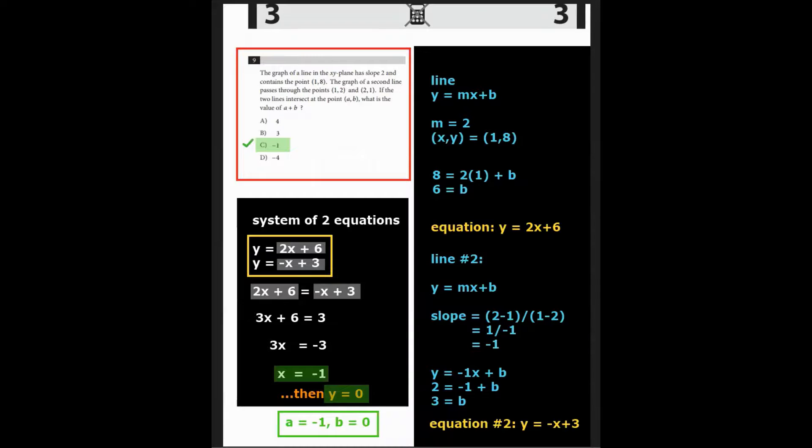Question nine. The graph of a line in the xy plane has slope two and contains the point one comma eight. The graph of a second line passes through the points one, two, and two, one. If the two lines intersect at the point a, b, what is the value of a plus b?